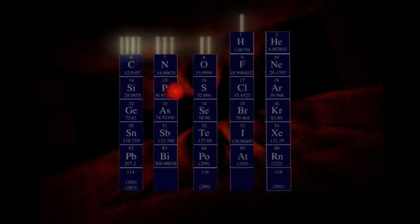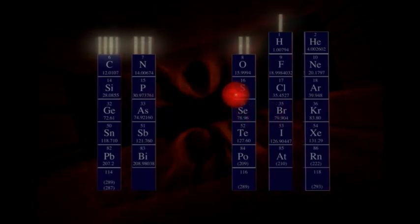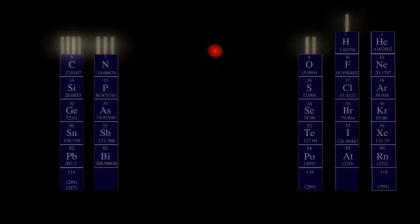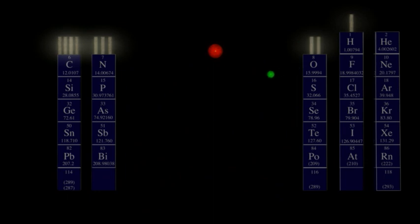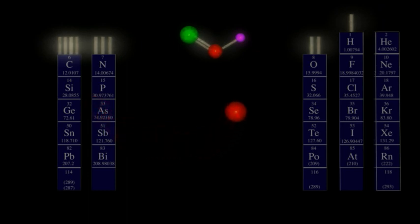Now this carbon atom wants to make four bonds, and it is pretty versatile about how it does this. Let's give it a double bond with oxygen, satisfying oxygen's desire for two bonds. And let's give it one hydrogen — that's a total of three bonds for carbon. It still wants another, so let's give it another carbon for its fourth bond.